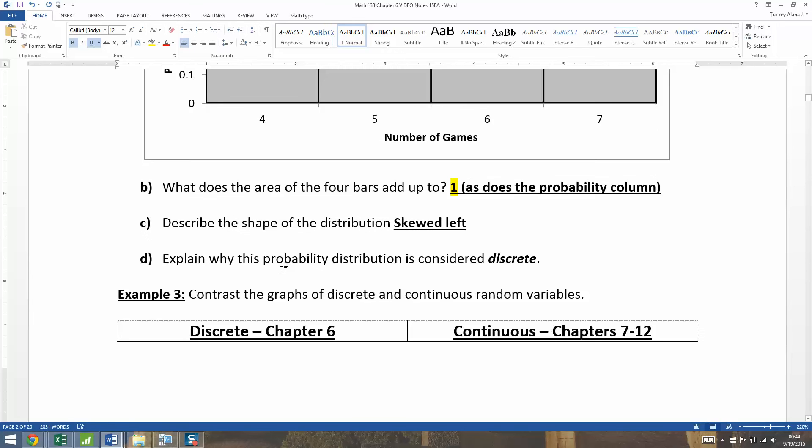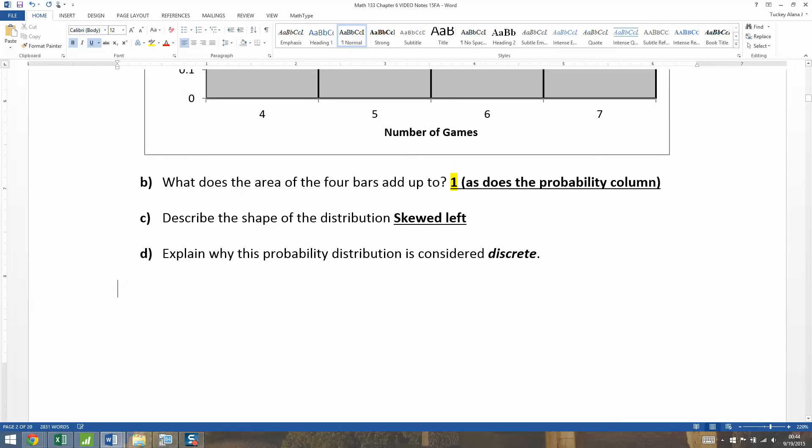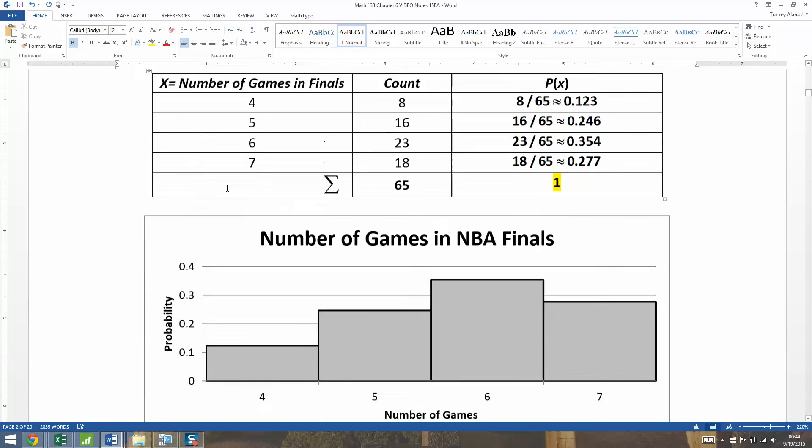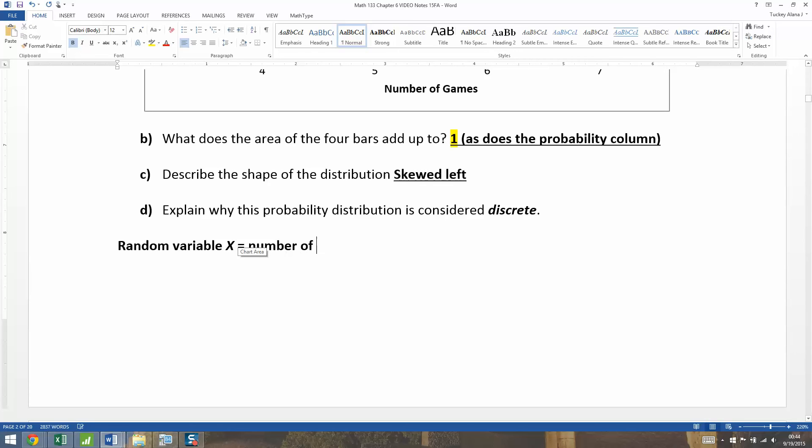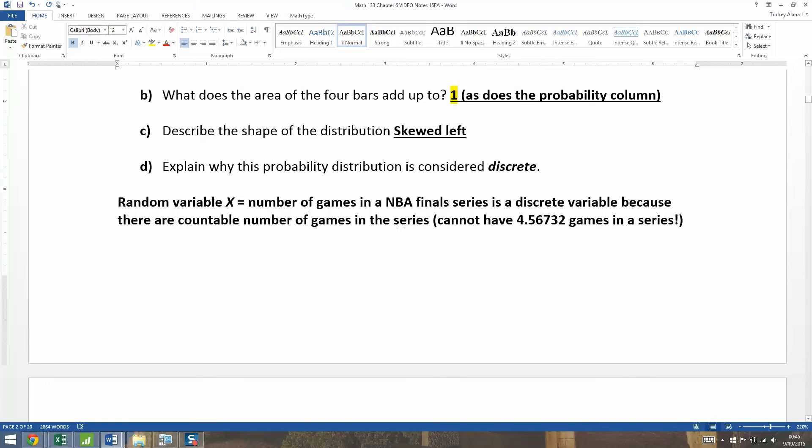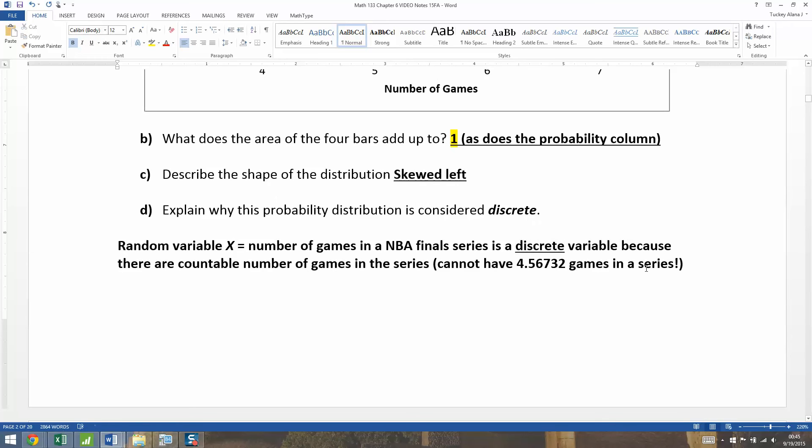Why is this a discrete probability distribution? That's because the random variable x, which equals the number of games in an NBA Finals series, is a discrete variable. You have to explain: because there are a countable number of games in the series. You cannot have 4.56732 games in a series. It's going to be a whole number - you either have four games, five games, or six games. That's what makes it discrete - you can't have decimal games in a series.